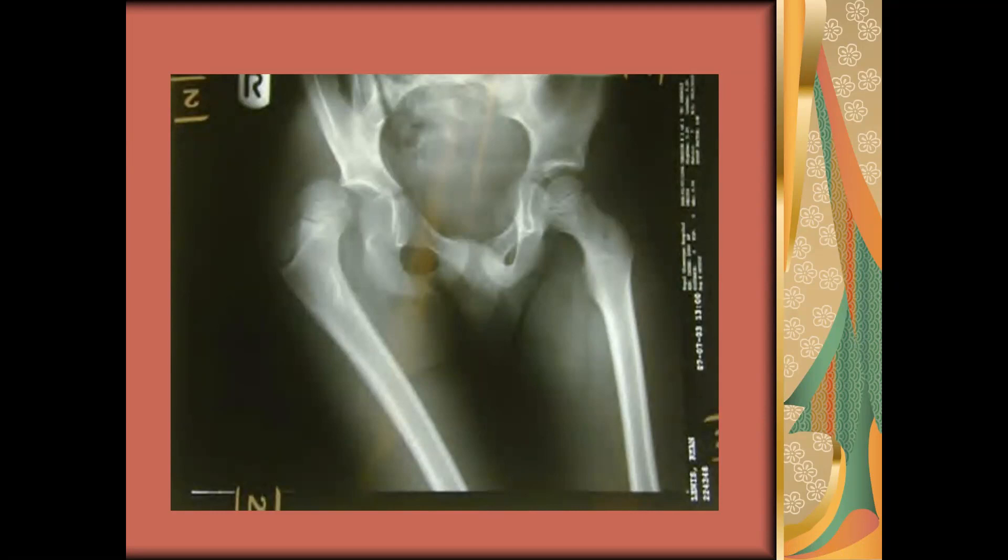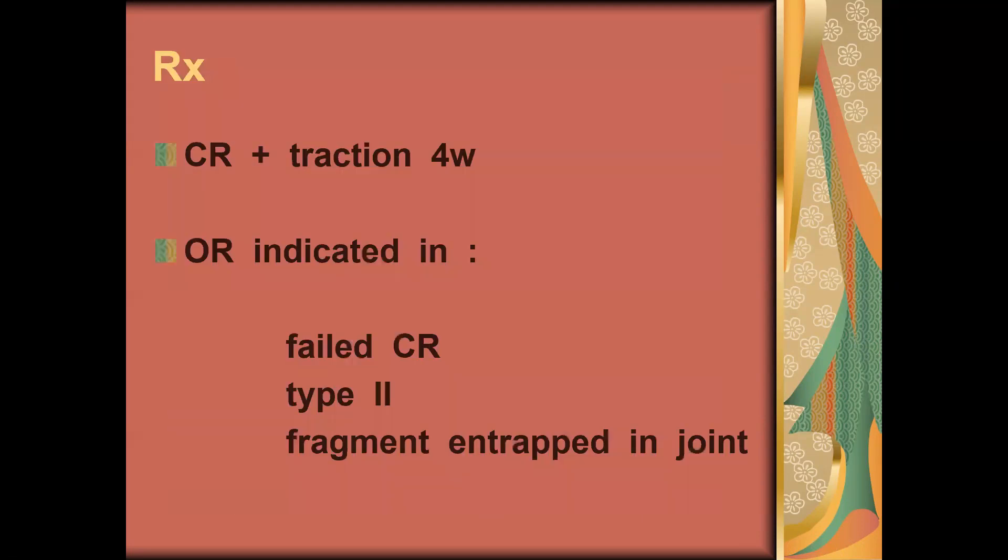Usually after we do closed reduction, we check the condition of the acetabulum. Treatment of posterior hip dislocation: for any dislocation, we must reduce it ASAP, as soon as possible. Usually they give eight hours for posterior hip dislocation to be reduced, otherwise the risk of complications, mostly avascular necrosis, will be very high. After we do closed reduction, we keep the leg in traction, longitudinal traction, skeletal traction or skin traction, for at least four weeks to give time for the soft tissue to heal.